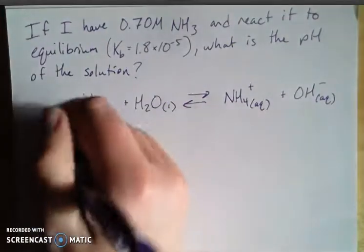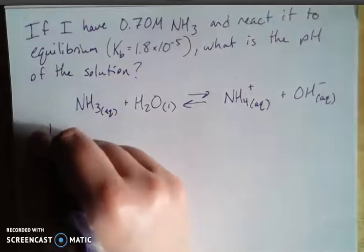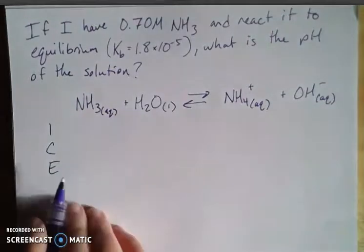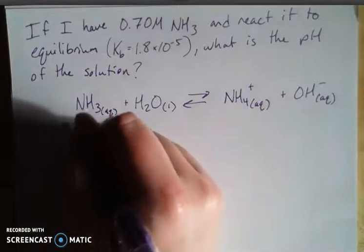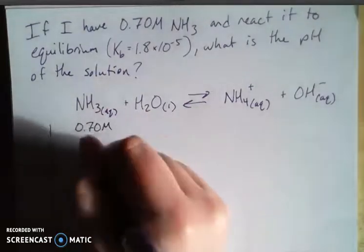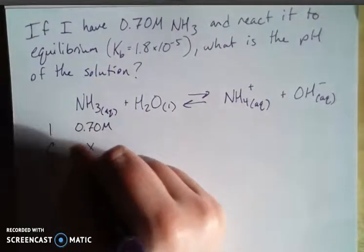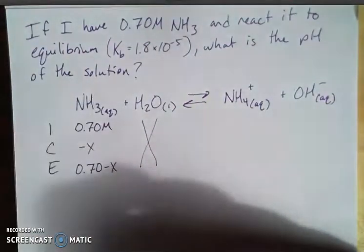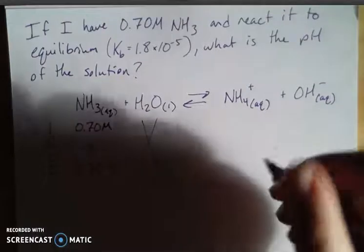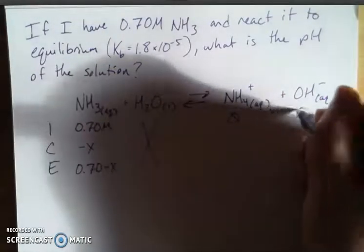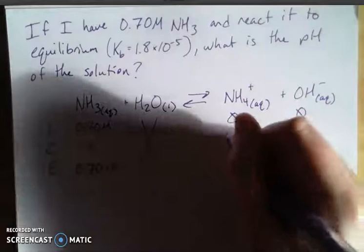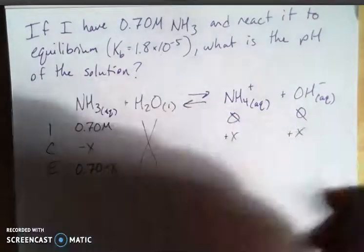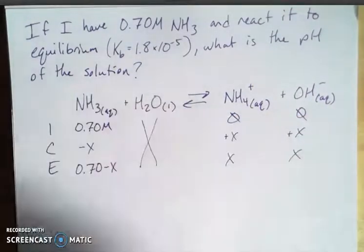We're given a concentration, so that should trigger an ICE box. So when we look at our ICE box, we have an initial concentration of our ammonia. We're losing some molar quantity, which gives us that to equilibrium. I'm going to be ignoring my water because it's not part of my equilibrium constant, and I don't start with any of my products. So I'm gaining molar quantities of each of these guys, which gives me x then.